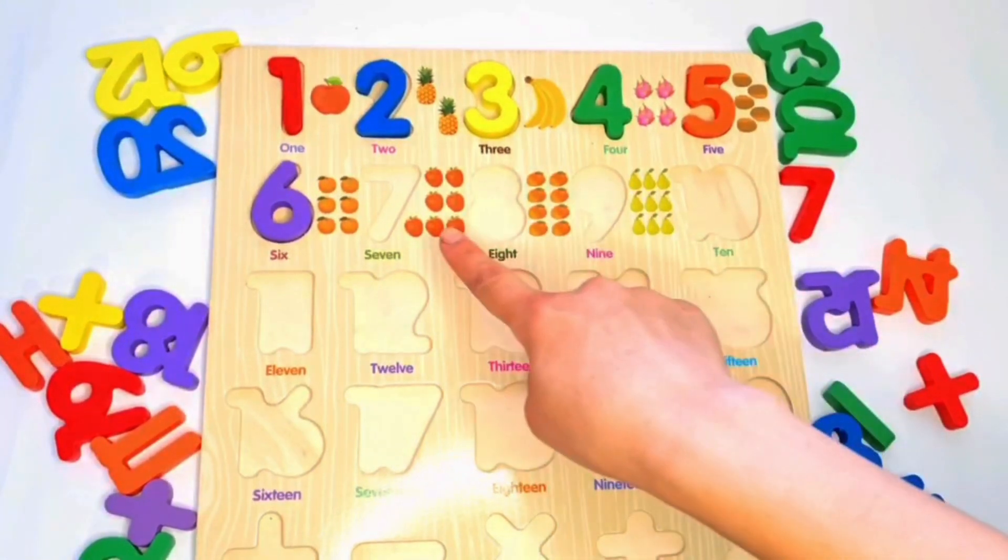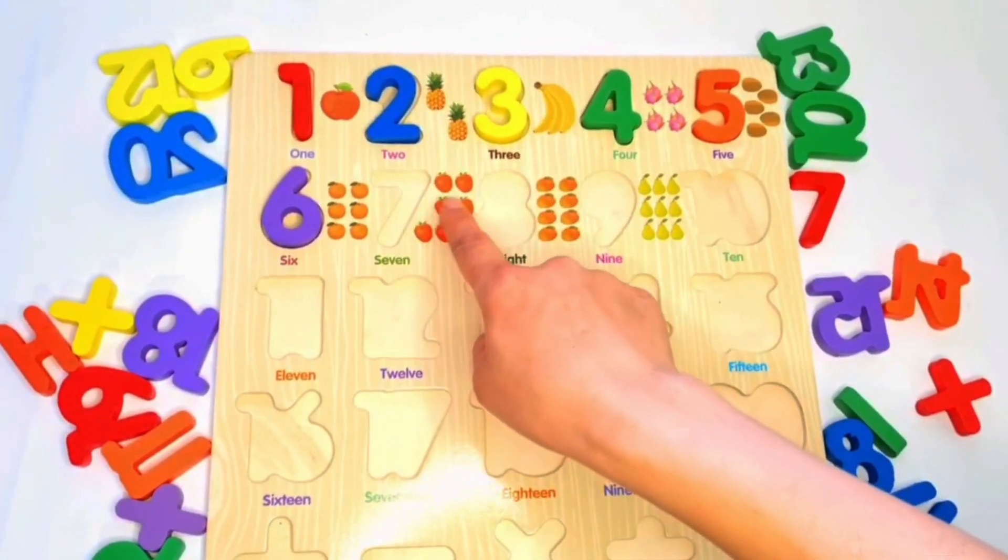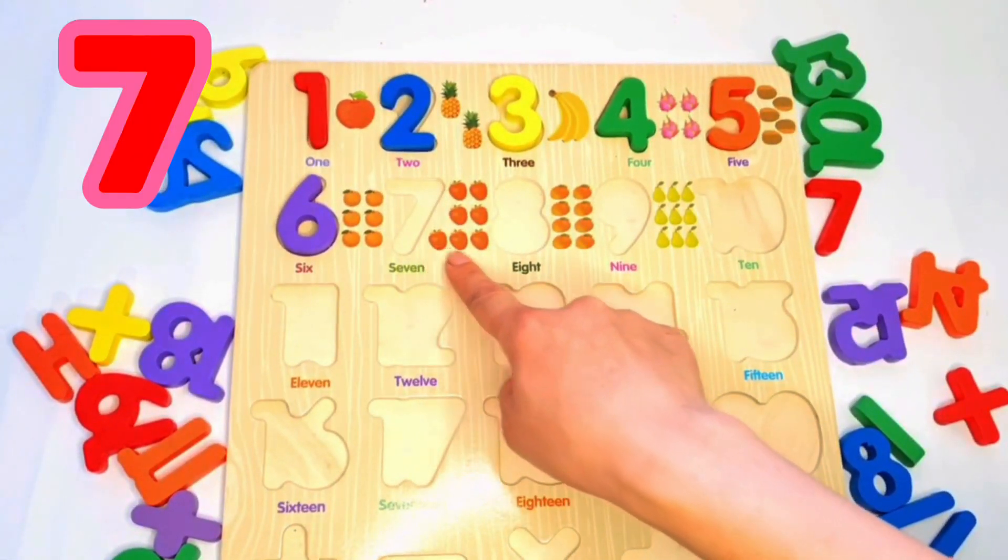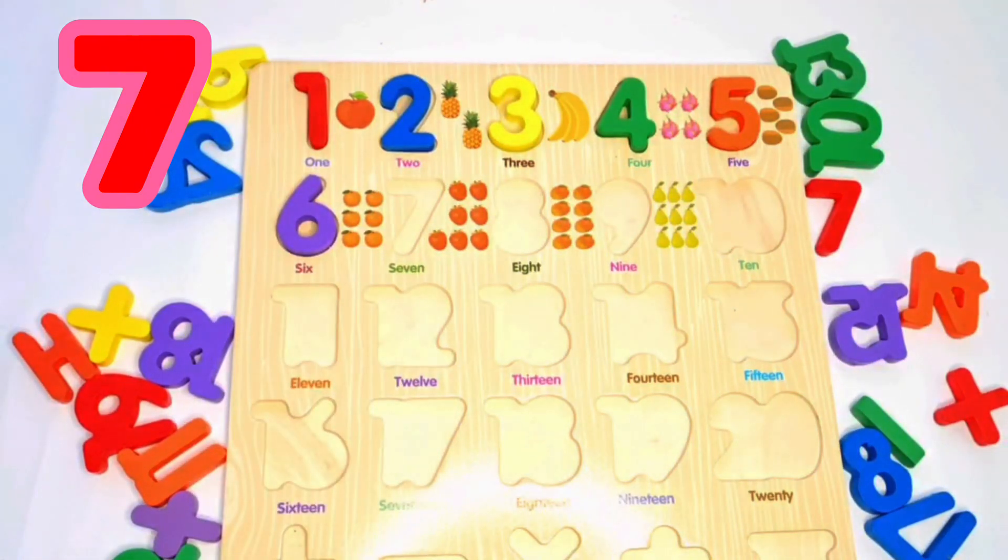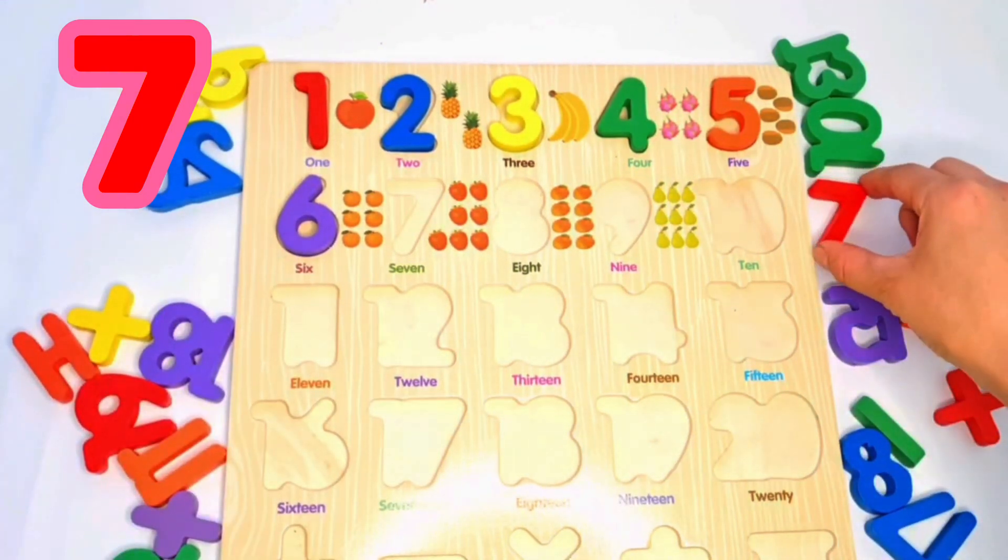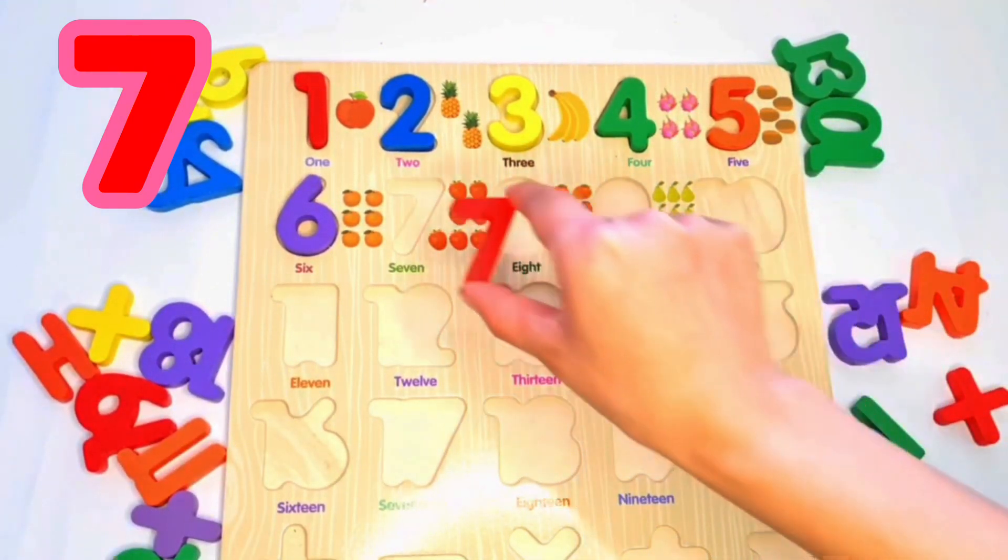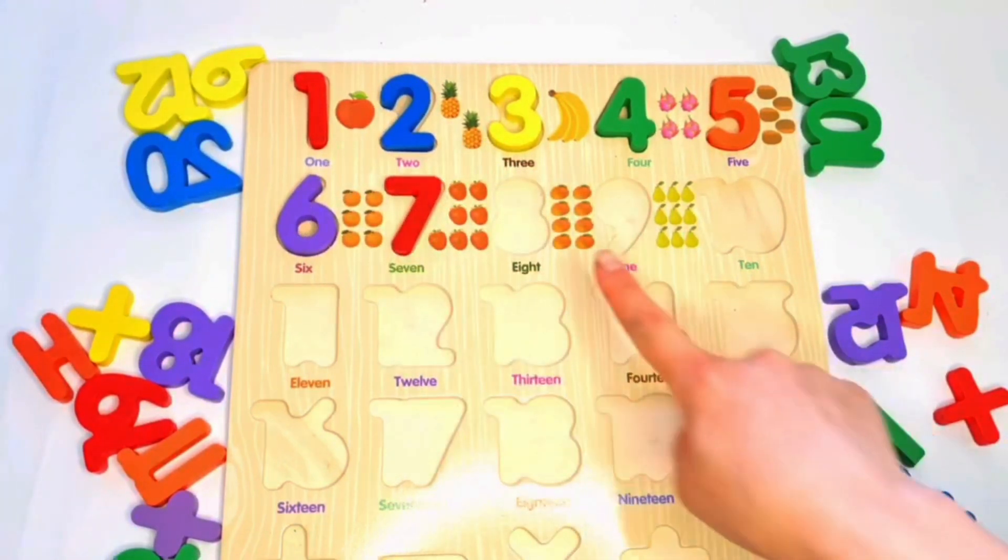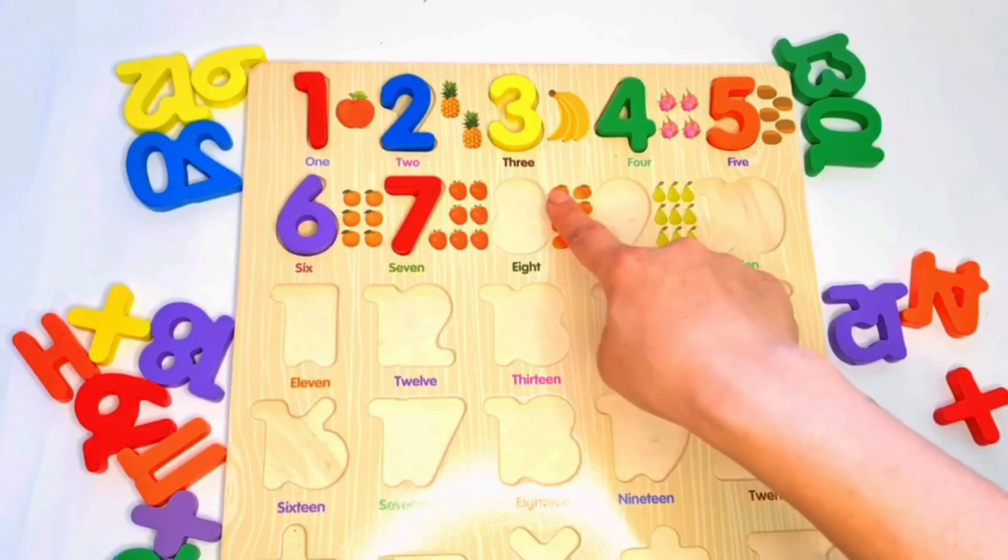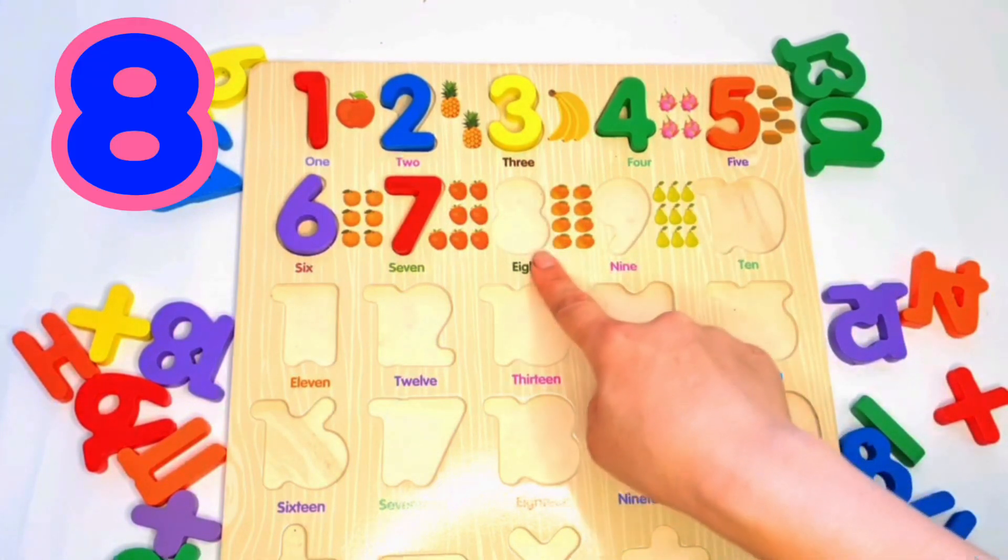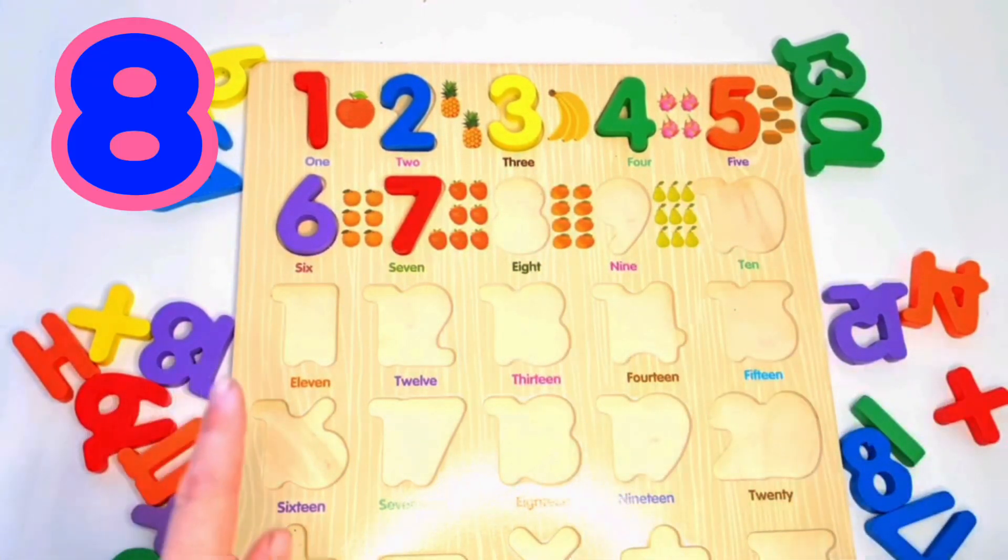Next our number, we'll hear one two three four five six seven. Seven strawberries. Here we put seven. Yeah, red seven. Next, one two three four five six seven eight. Eight mango. Let's put here eight number.